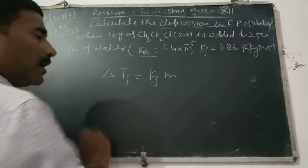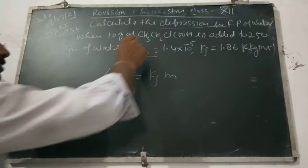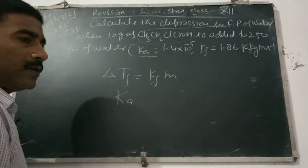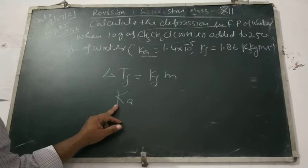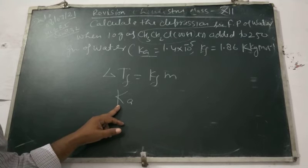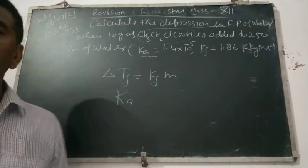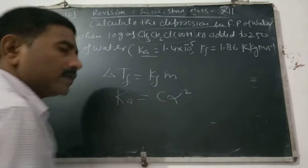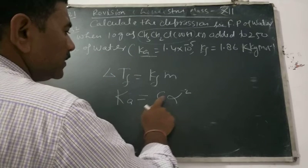यहाँ पर देखिए कि dissociation constant of acid, Ka दिया है। इस acid के लिए — यह acid weak acid है। तो for weak acid, Ostwald's dilution law applicable होता है। Weak acid के लिए Ka is equal to C·α². यह हम लोग पिछले video में cover कर चुके हैं। तो Ka दिया हुआ है, C·α² से solve करना है।